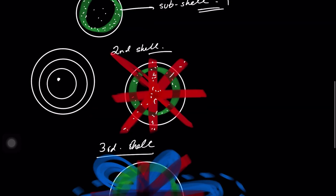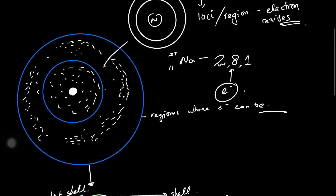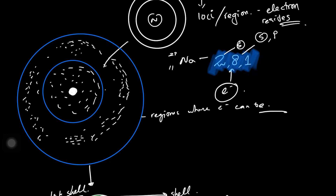In reality, the simple electronic configuration like 2, 8, 1 is not the full picture. What we learn is that these electrons reside on S subshells, P subshells, D subshells, and so on — distributed across different subshell types depending on the shell.